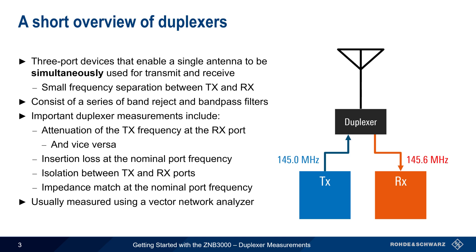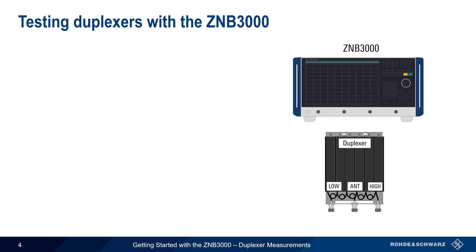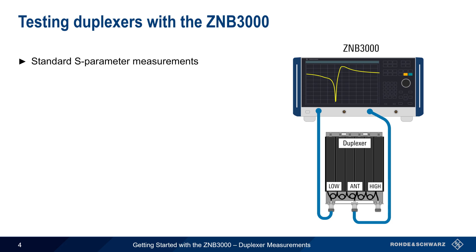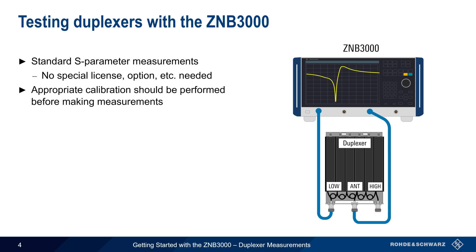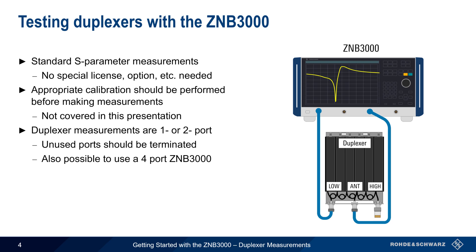All of these are usually measured using a vector network analyzer. Duplexer measurements using the Rohde & Schwarz ZMB3000 are standard S-parameter measurements — signals are both sourced and measured by the ZMB. S-parameter measurements are a standard feature on the ZMB3000 and don't require any special licenses or options. As with most VNA measurements, an appropriate calibration should be performed before making these measurements. Duplexer measurements are all one- or two-port measurements, and unused duplexer ports should be terminated. Note that it's also possible to use a four-port ZMB3000 and have all of the duplexer ports connected to and terminated by the ZMB.